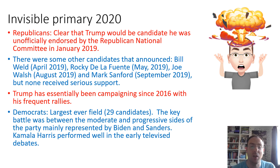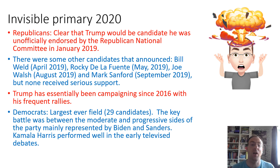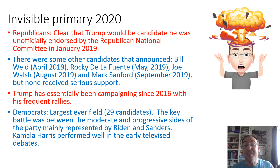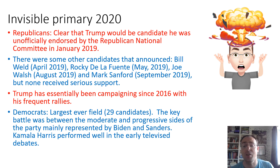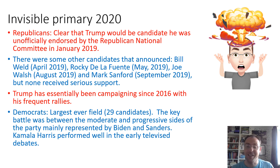The 2020 invisible primaries are quite interesting. It was quite clear that Trump would be the candidate, as he was unofficially endorsed by the Republican National Committee back in January 2019. There were some other candidates that announced — Bill Weld, Joe Walsh in August 2019, and Mark Sanford in September 2019 — but none of these really gained any serious support. No real big hitter came in to take on Trump, so on the Republican side this was fairly smooth. You can say Trump has really essentially been campaigning since 2016 with his frequent rallies in states where he's very popular.